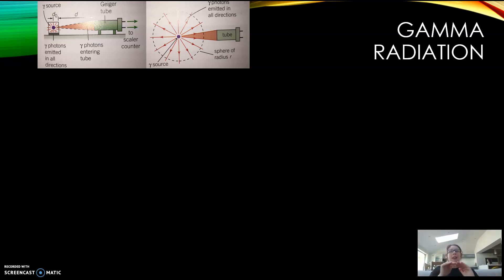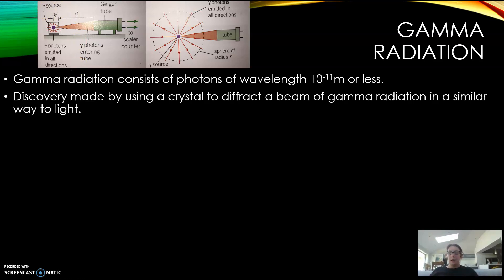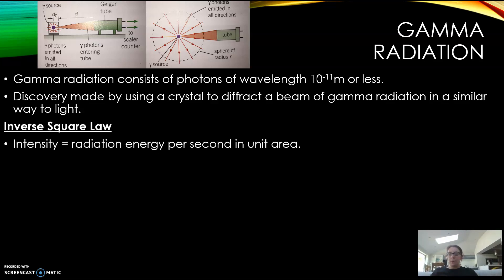It's not a flat surface area, it's a 3D surface area. Gamma radiation consists of photons of wavelengths 10 to the minus 11 meters or less. The discovery of gamma radiation was made by using a crystal to diffract a beam of radiation in a similar way to light. You use a crystal with a really small gap in it and it will perform diffraction.